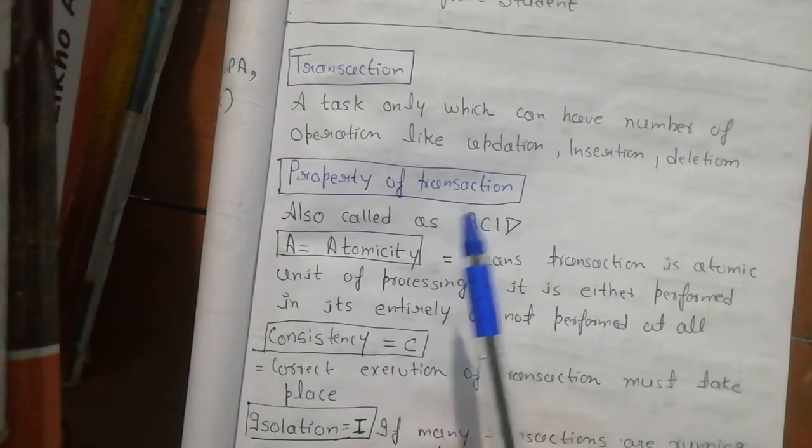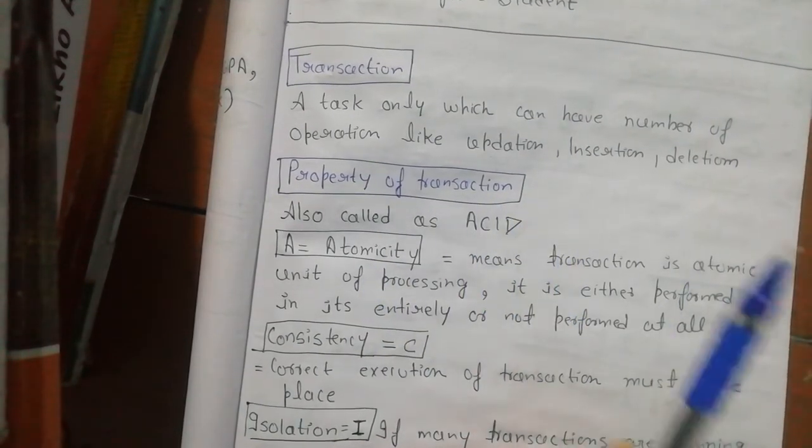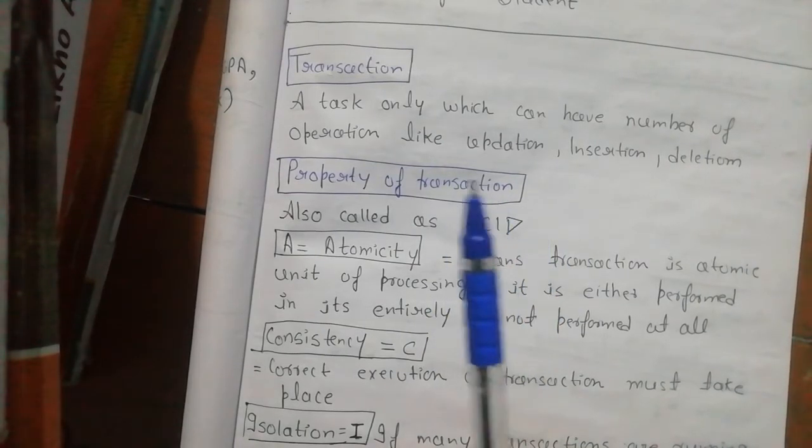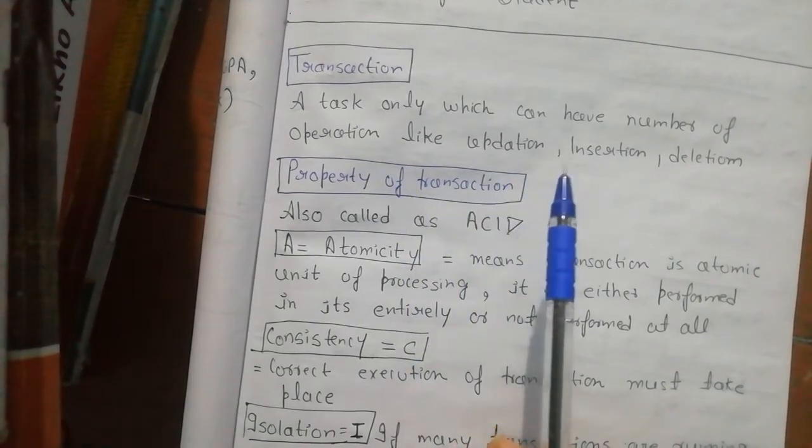What is Atomicity? Each transaction is an atomic unit of processing. If they are atomic, then they are performed. If they are not, they are not performed at all.